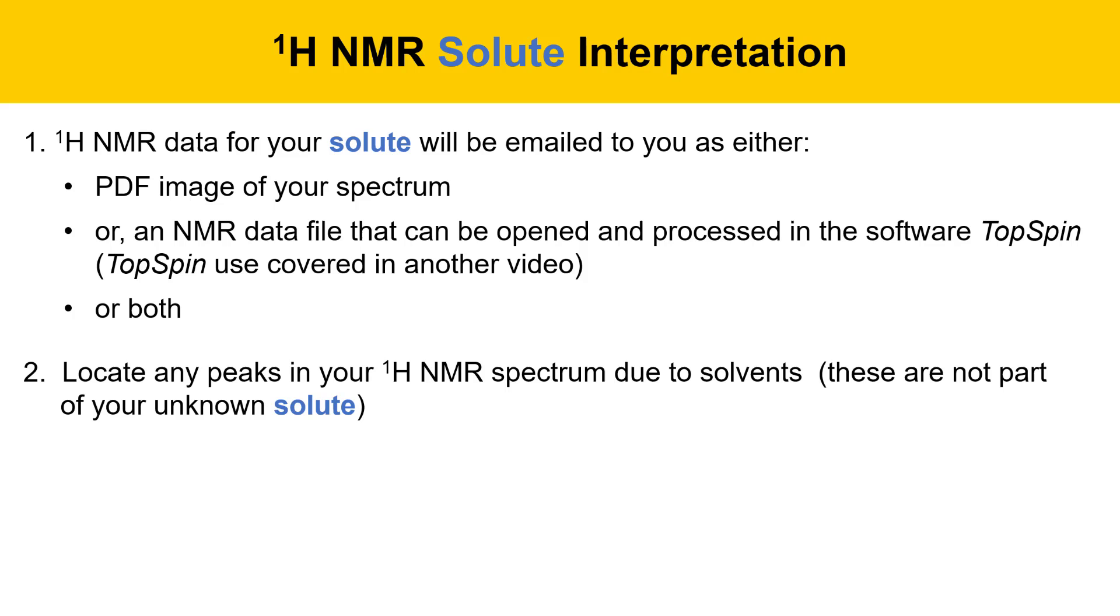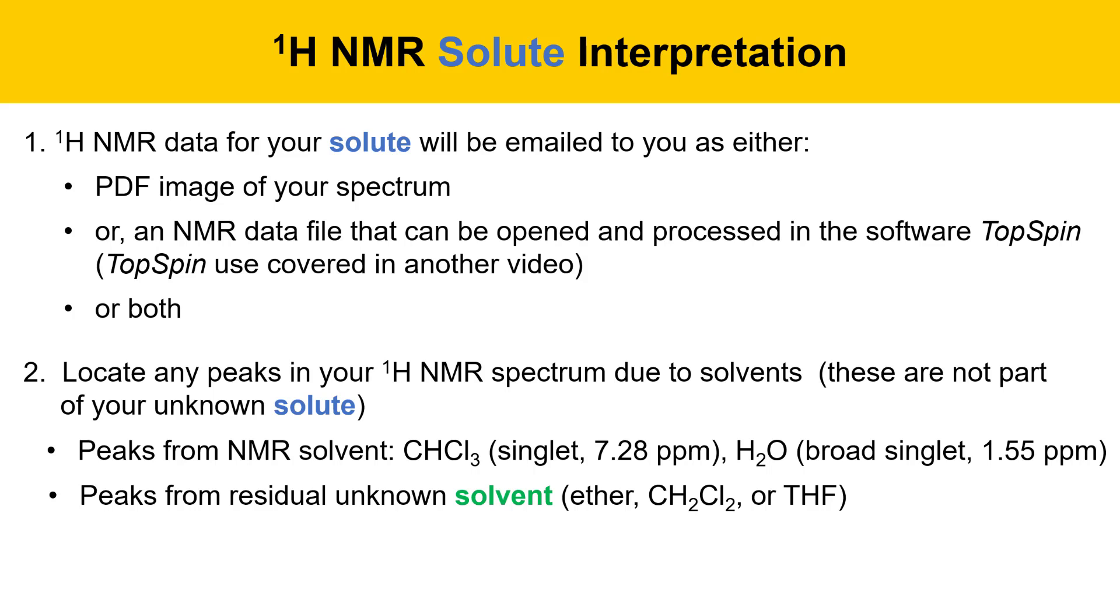You need to locate any peaks in your proton NMR spectrum that are due to solvents and recognize that these are not part of your unknown solute. These come from peaks due to materials in the NMR solvent, like CHCl3, that's a singlet that appears at 7.28 parts per million. Water is often also present as a broad singlet at about 1.55 parts per million. Then there could also be peaks from residual unknown solvent that are present. If your unknown solvent was ether, you might have ether peaks. If your solvent was dichloromethane, you might have a dichloromethane peak. Or tetrahydrofuran peaks if your unknown solvent was THF. On subsequent slides I'll go through all of these and show you where those peaks show up. Once you've located all the solvent peaks that could possibly be in your spectrum, then you should assign the remaining peaks to your unknown solute.